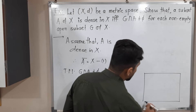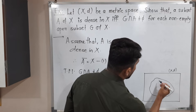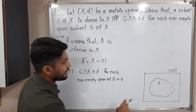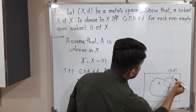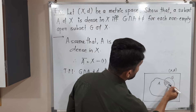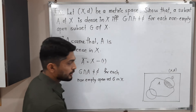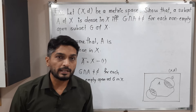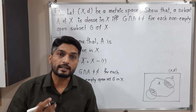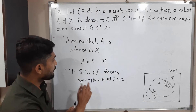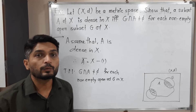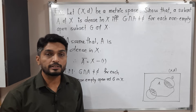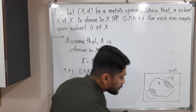We have a metric space (X, d), and A is any set which is dense in X — meaning its closure is X. We have to prove that if you take any non-empty open set G, the intersection with A is non-empty. Generally in mathematics when we want to prove something, we assume exactly the opposite. So I will assume: let it be possible that there exists a non-empty open set G such that G intersection A equals phi.